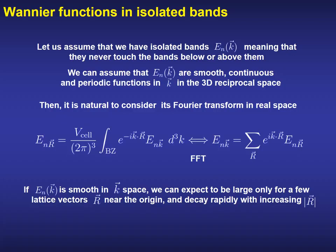We can assume that the bands are smooth, continuous, and periodic functions in the first Brillouin zone of the three-dimensional reciprocal space. Then, it is natural to consider its Fourier transform between reciprocal and real space, defined using some conventions for the normalization factors by the first equation at the left, where the capital R is a vector of the Bravais lattice in real space. The inverse transform from real space back to reciprocal space is defined by the equation at the right. If the band structure is smooth in reciprocal space, then we can expect that the corresponding Fourier components will be large only a few lattice vectors away from the origin, decaying very rapidly with increasing distance.